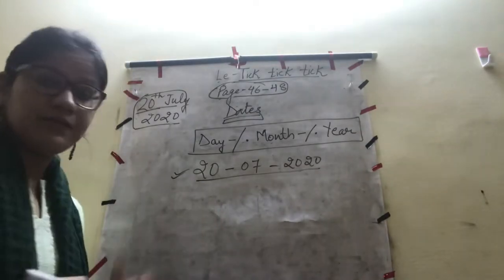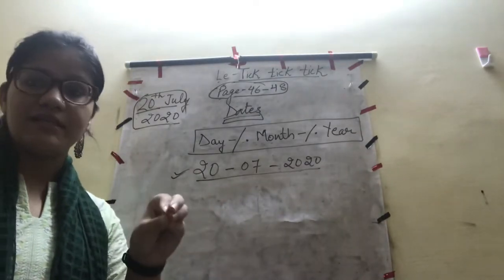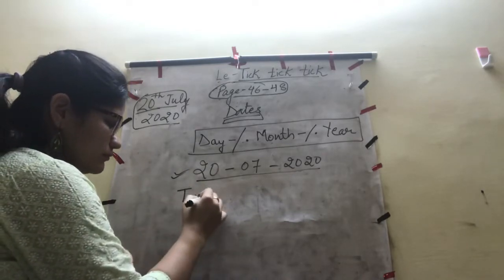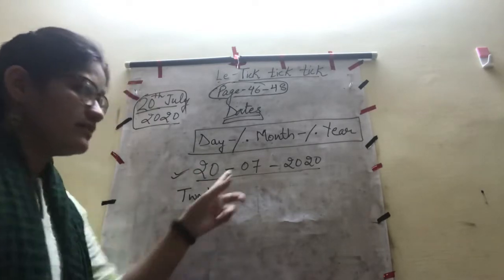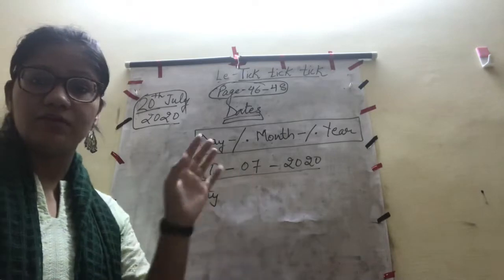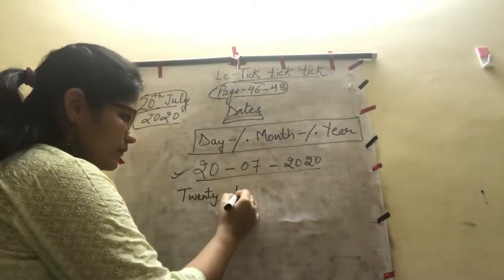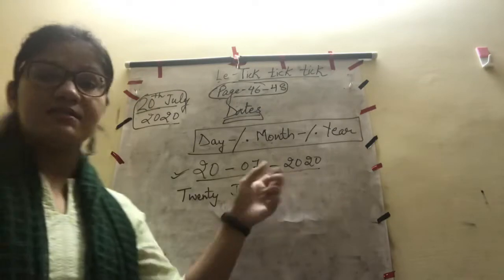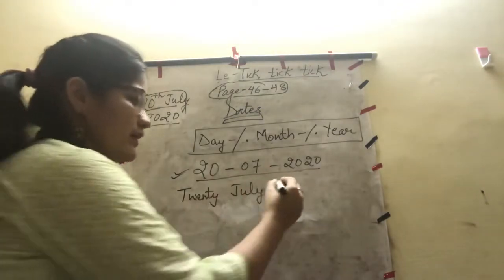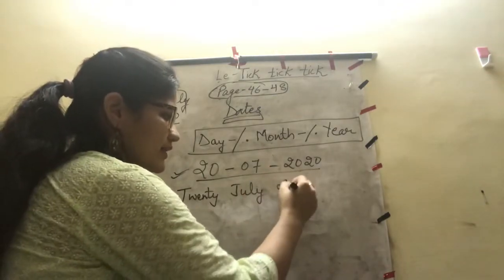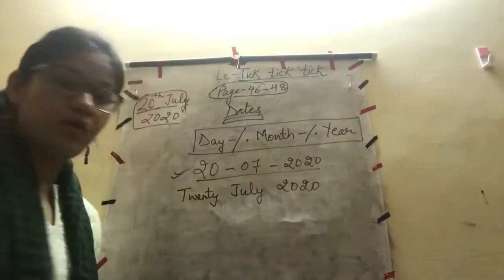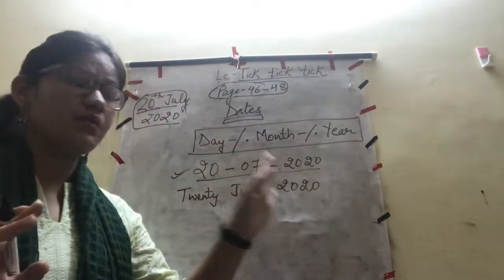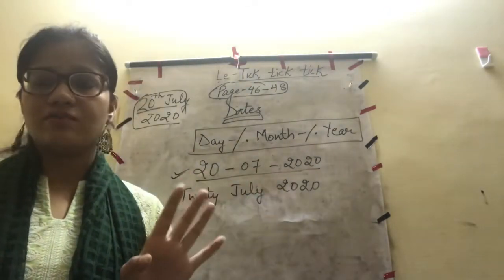You can simply write the day 20 in words. Then the 7th month of the year, that is July. And the year is 2020 — you can write 2020 as a number, or you can also write it in expanded form. Either way is acceptable.